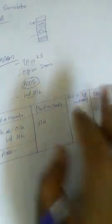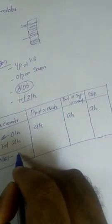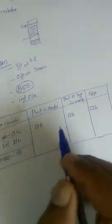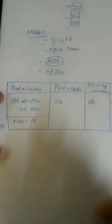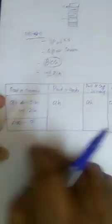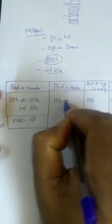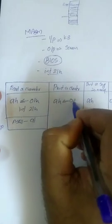The keyboard is ready to read; I get the ASCII number. That ASCII value is stored in the AL register. The parameter 02H is used for print character — that is, moving 02H into AH before calling INT 21H.